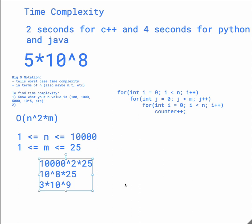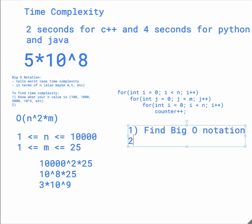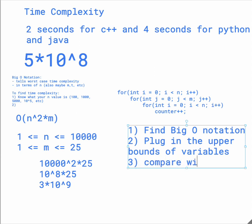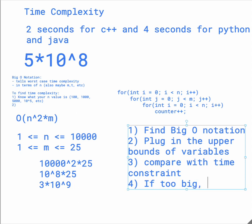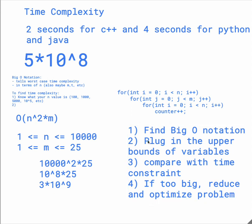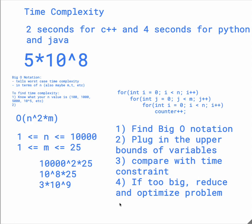But I just wanted to go over what you want to do with the big O notation once you've calculated that. So the steps we took: find the big O notation, plug in the upper bounds of the variables, compare with the time constraint, and if it's too big, reduce and optimize your code. So thank you for watching.